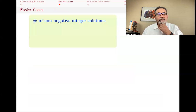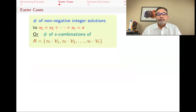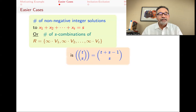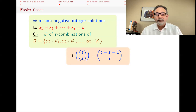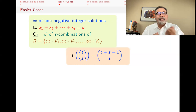There are some cases of similar problems — sub-multisets of a multiset — that we have already done. For example, if someone asks for the number of non-negative integer solutions to X1 plus X2 plus X3 equals S with no conditions, that's the same as finding S-combinations of a multiset where the multiplicity numbers are effectively infinite. In that case, we have seen in other videos that the answer is t multi-choose s, which equals t plus s minus 1 choose s.